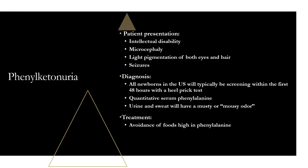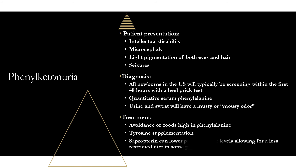For treatment: avoid foods high in phenylalanine — cheese, eggs, fish, diet soda due to aspartame — and provide tyrosine supplementation, since these patients don't produce enough. Another option is sapropterin, which can lower phenylalanine levels and allow a less restricted diet in mild to moderate cases. The main goals are to decrease phenylalanine and increase tyrosine.